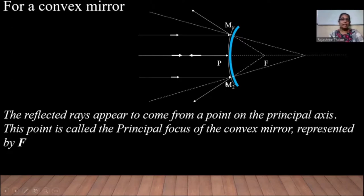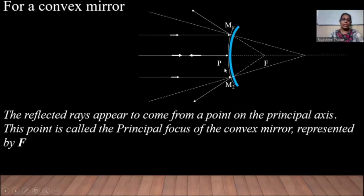These are the normals to the surface at those points. This is the center of curvature. The angle of incidence is the angle between the normal and the incident ray. The angle of reflection is equal to the angle of incidence. If the angle of incidence is theta, the angle of reflection is also theta. Hence, you can see this angle will also be theta, and therefore this angle will be 2 theta.